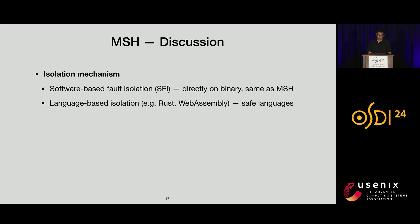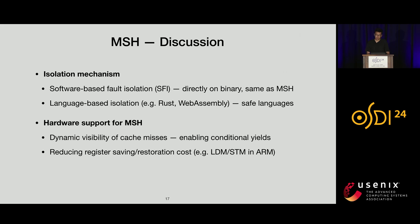The paper also discusses several related aspects of MSH. First, isolation mechanisms for primary and scavenger residing in the same process have been widely studied, with two classes of solutions: software-based fault isolation (SFI) at the binary level, and language-based isolation requiring safe languages. Operating at the binary level, MSH can coexist with either. Second, we discuss potential hardware support to improve MSH performance, including dynamic visibility of cache misses to make instrumented yields conditional, and ways to further reduce register saving and restoration costs.